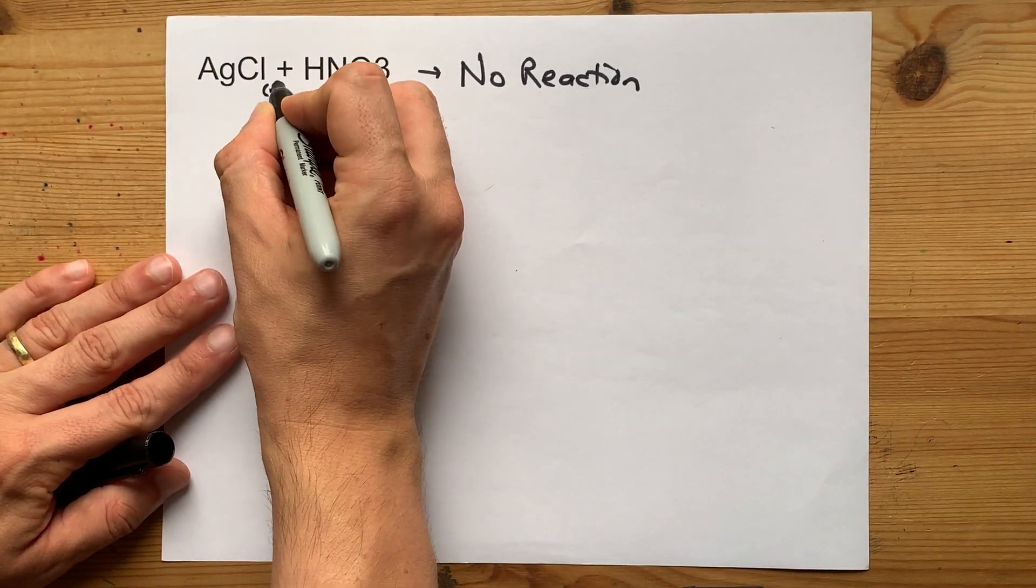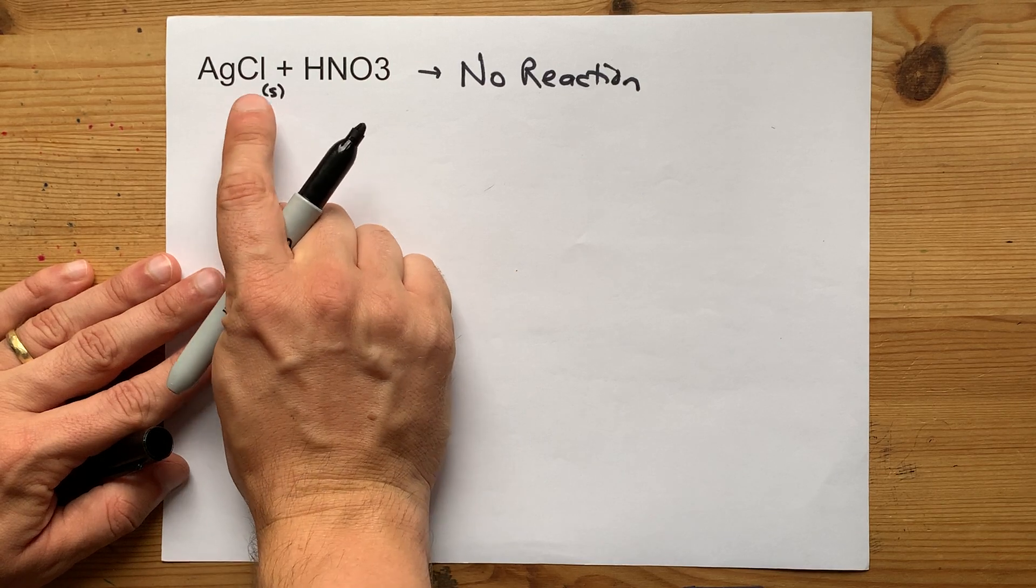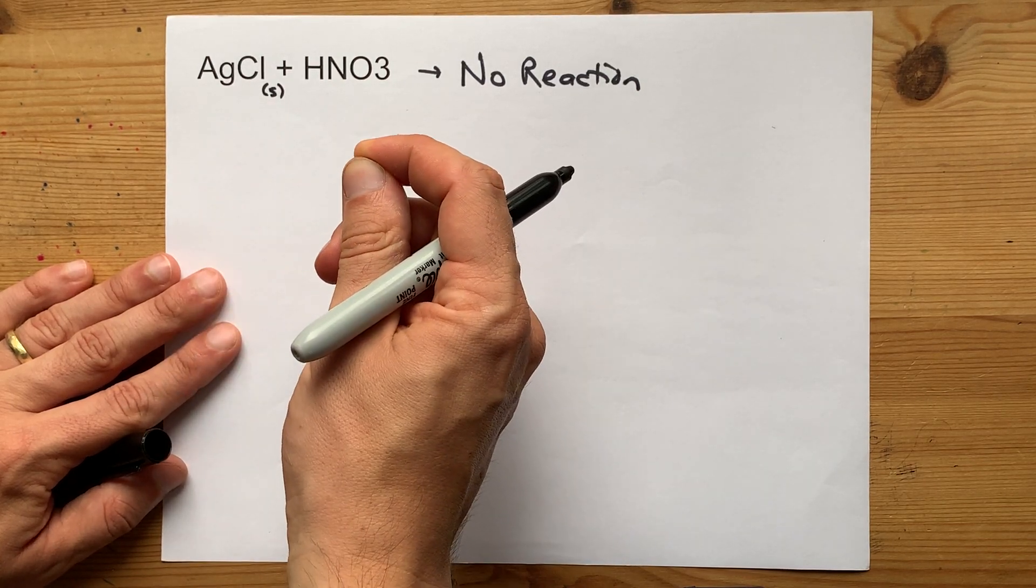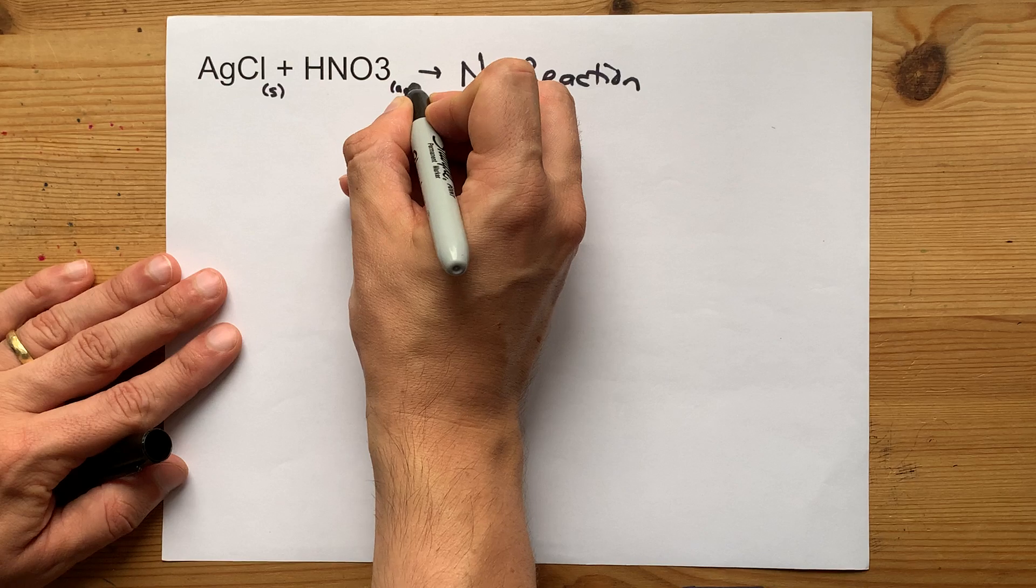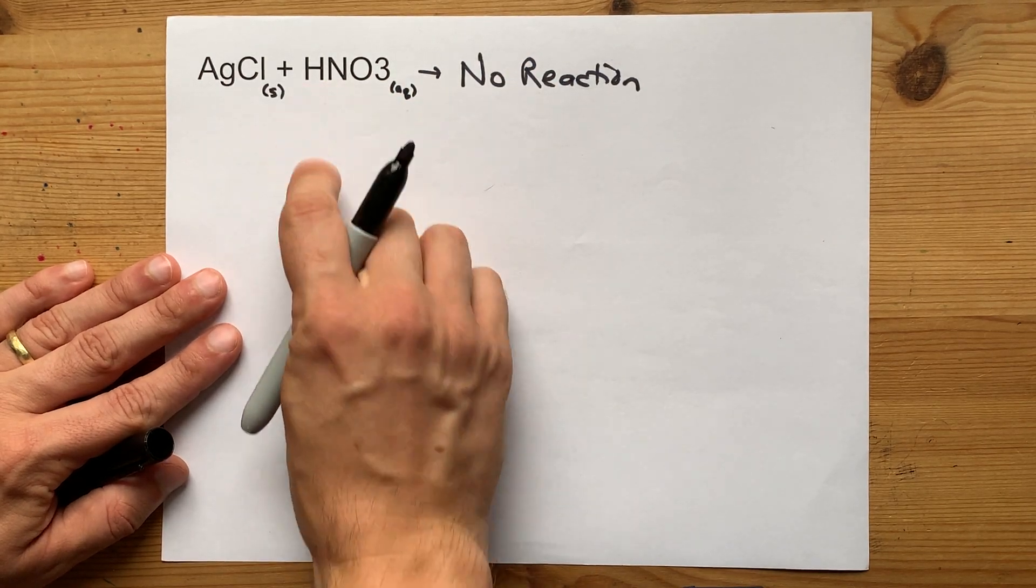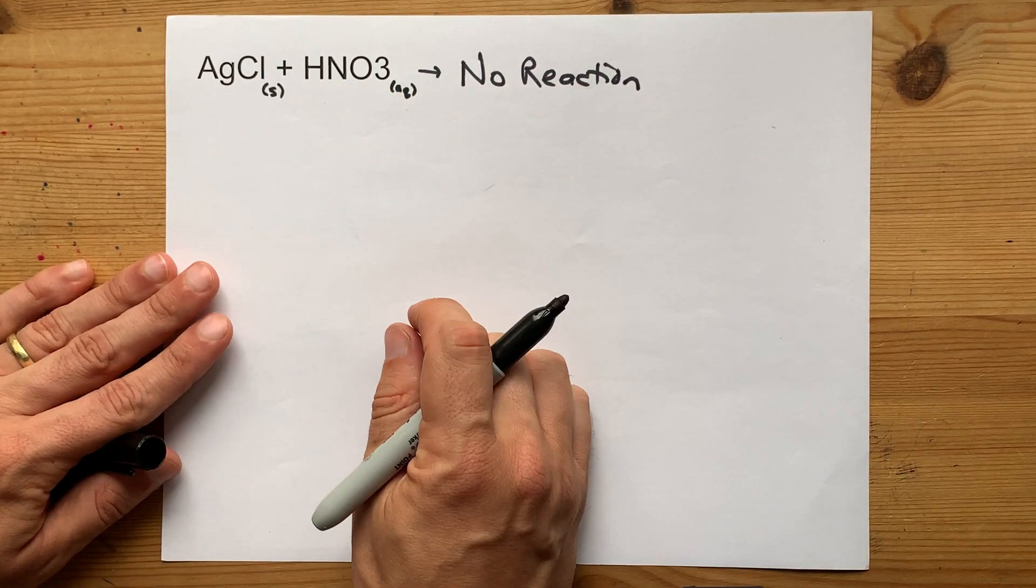AgCl is insoluble in water. That means it is a solid or a precipitate. Nitric acid dissolves in water. It is aqueous. It gives you H plus ions and NO3 minus ions.